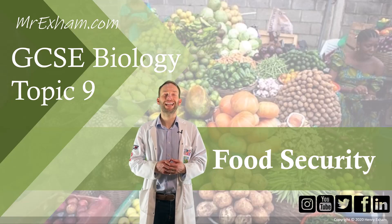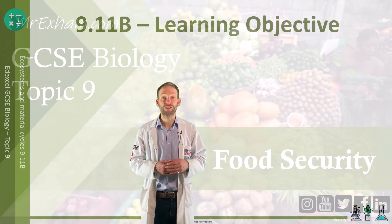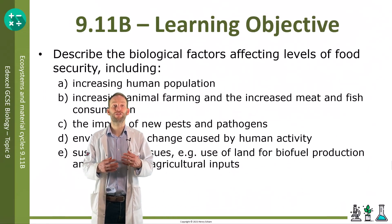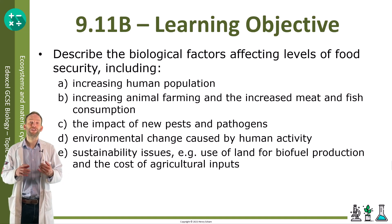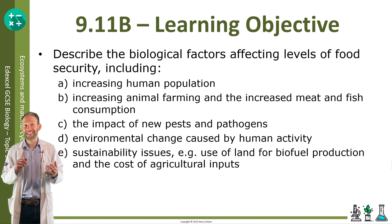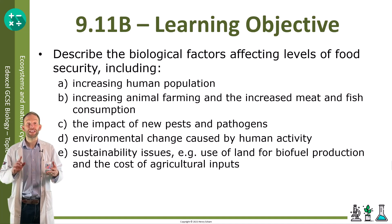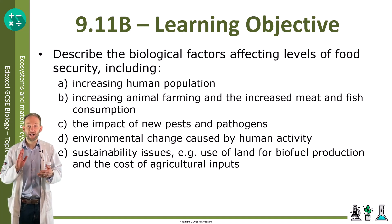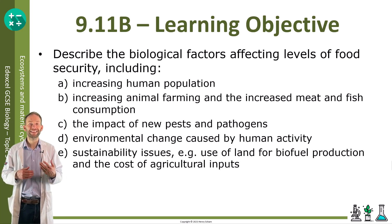Objective 9.11: describe the biological factors affecting levels of food security, including increasing human population, increasing animal farming and increased meat and fish consumption, the impact of new pests and pathogens, and environmental change caused by human activity and sustainability issues.